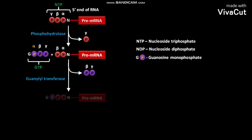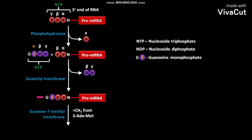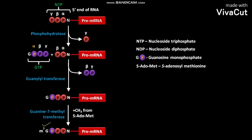As a result, the pre-mRNA having a guanosine residue-added cap is formed. In the next step, in the presence of guanylyl transferase, a CH3 or methyl group from S-adenosylmethionine (S-AdoMet) is added to the guanosine residue of the cap. As a result, a pre-mRNA having a 7-methylguanosine cap is formed. N7 stands for 7-methyl, and M stands for methyl.